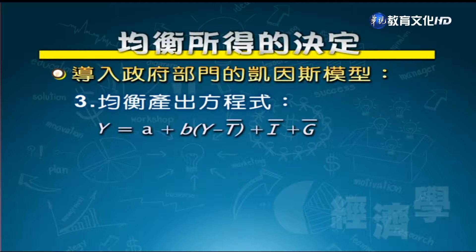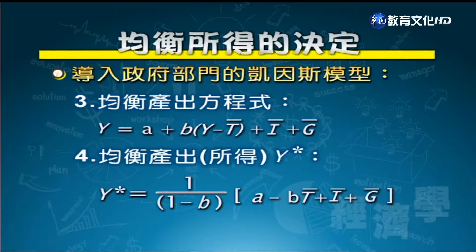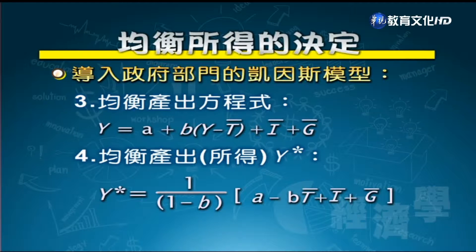凱因斯認為需求創造供給，總供給決定於總需求。因此可解出均衡產出 Y*：將 Y = A + B(Y - T̄) + Ī + Ḡ 展開求解，得 Y* = 1/(1-B) × (A - BT̄ + Ī + Ḡ)。前面的乘數 1/(1-B) 與簡單凱因斯模型相同。